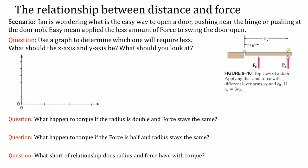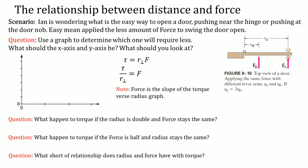Let's take a look at the relationship between distance and force. Ian is wondering what is the easiest way to open a door — pushing near the hinge, or pushing at the doorknob. Easy means the least amount of force for the door to swing open. You would use a graph to determine which one will require less force. We know the equation for torque equals R perpendicular times F. Dividing both sides by R perpendicular, you see that F equals torque divided by R. This should look like your slope equation. You should notice that force is the slope of the torque versus radius graph — torque goes on the y-axis and radius goes on the x-axis.